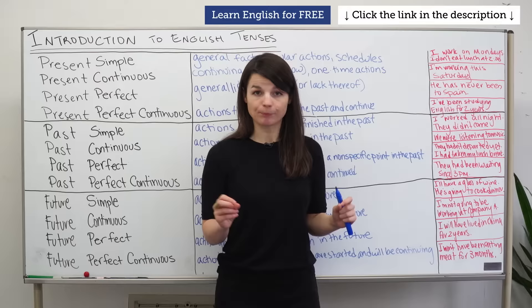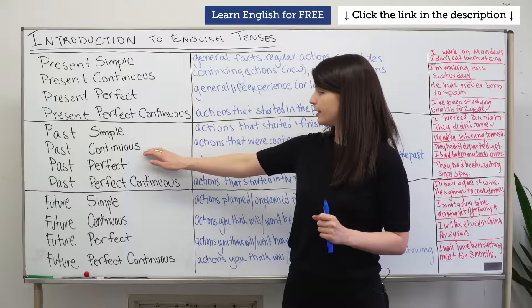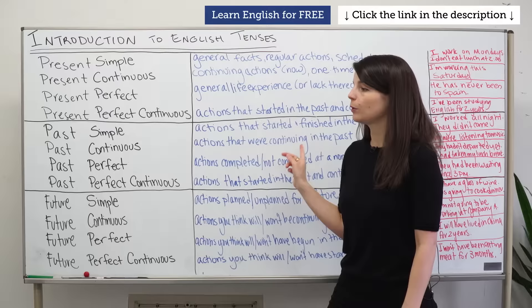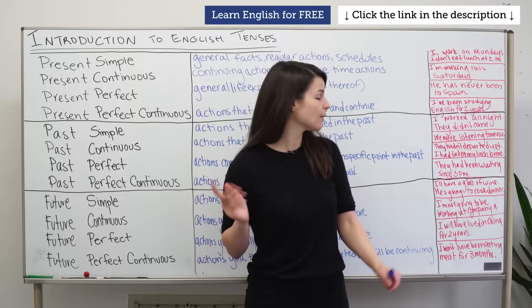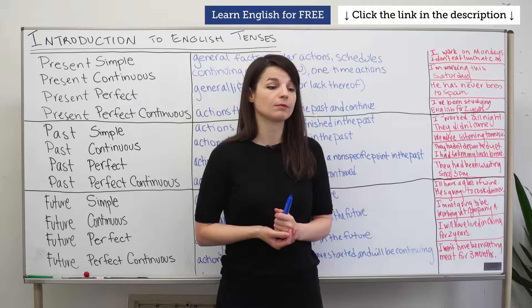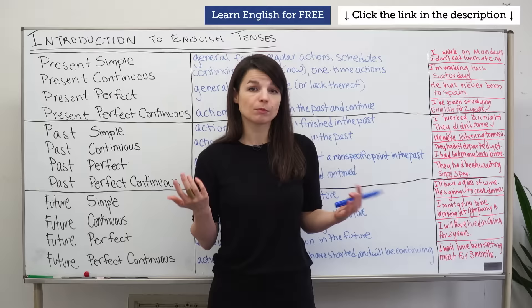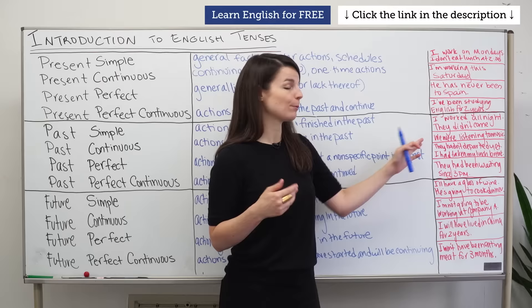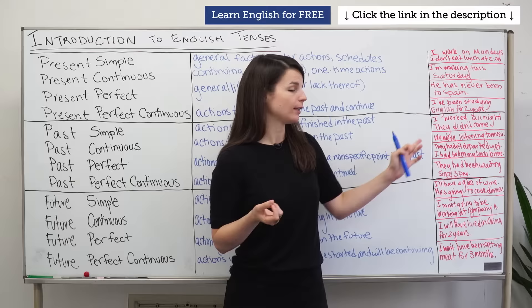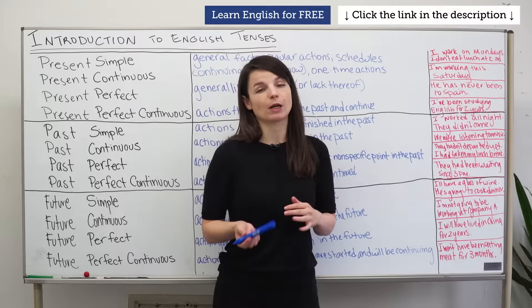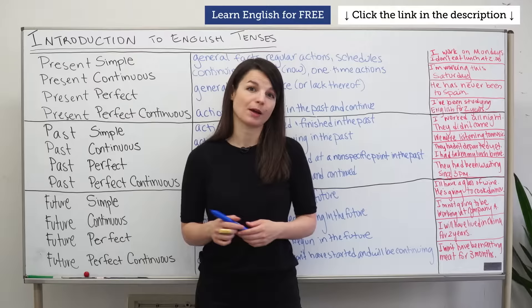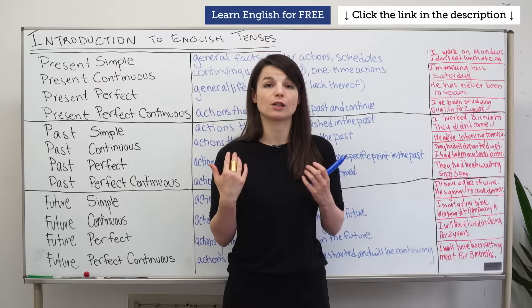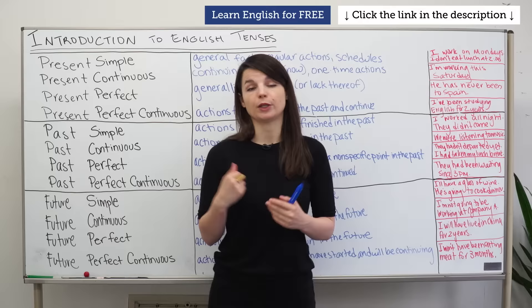Past continuous is for actions that were continuing in the past, often used with a specific point in time. Example: 'We were listening to music at 8pm' or 'We were listening to music yesterday.' It's commonly used in response to questions like 'What were you doing last night?' or 'What were you doing this morning?' — when you want to know someone's activities at a specific point in time.